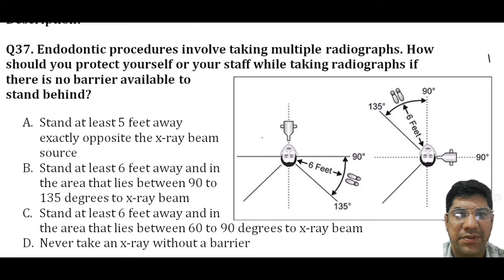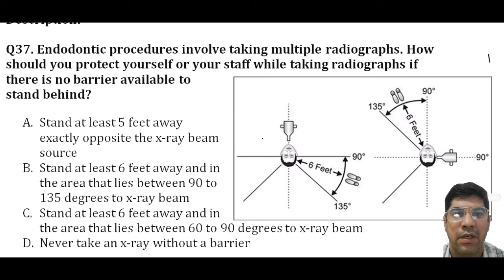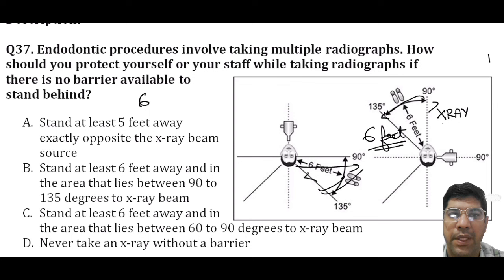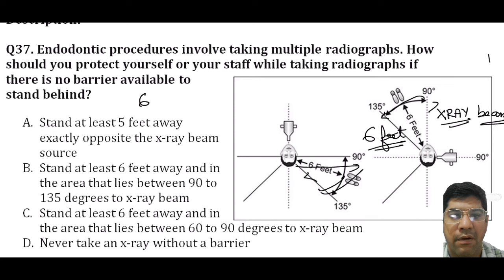During an endodontic procedure involving multiple radiographs, how should you protect yourself or staff while taking radiographs if no barrier is available to stand behind? It is important to stand at least six feet away in an area that lies at an angle of 90 to 135 degrees to the x-ray beam. This position helps reduce radiation exposure. You can also use faster films like E or F films for reduced radiation exposure.